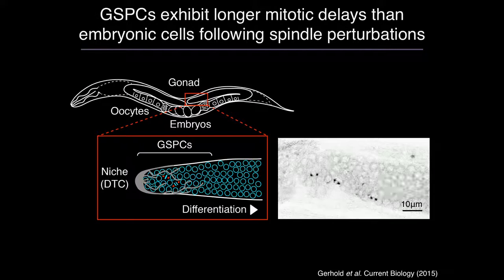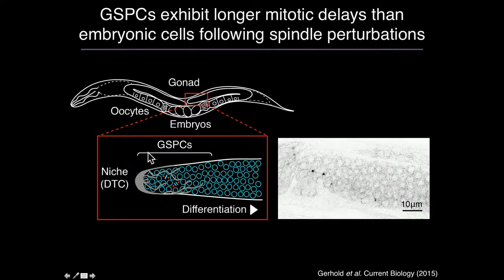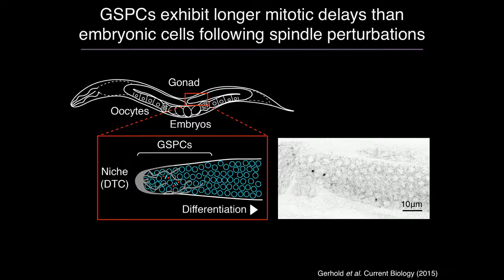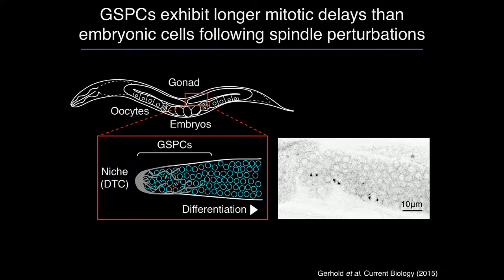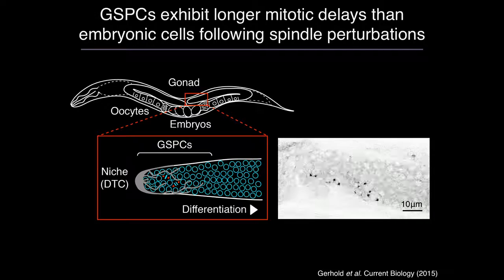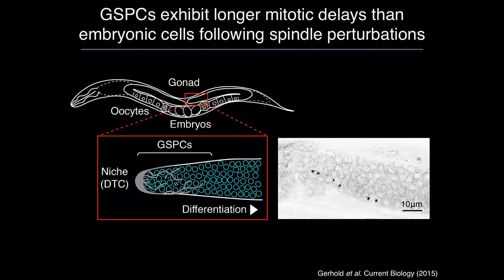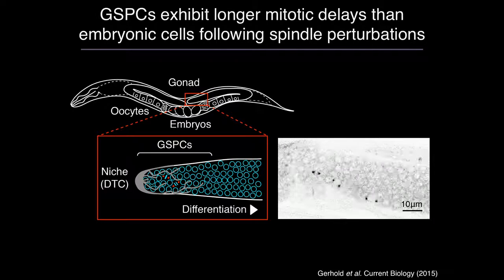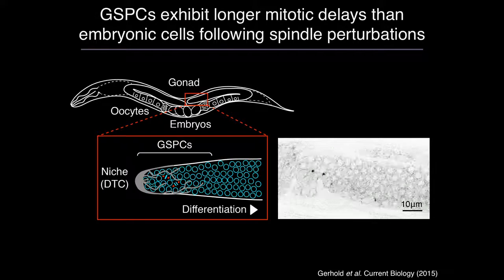We've previously used live imaging to characterize the checkpoint in the adult germline stem and precursor cells in C. elegans, or GSPCs. When we measured the length of the mitotic delay in these cells following spindle perturbations, we noticed that these cells delayed for significantly longer than embryonic blastomeres. We thought this was particularly interesting in light of the longstanding but poorly understood observation that checkpoint activity can vary widely between cell types and that embryonic cells are thought to have a notoriously weak checkpoint. We thought it was a good opportunity to investigate how checkpoint activity might be modulated during development.